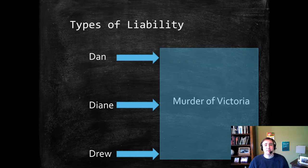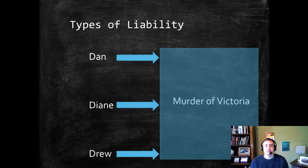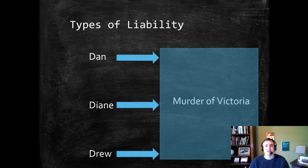If you look at the slide here, we imagine there's a murder of a person Victoria — conveniently begins with V for victim — and we have three suspects Dan, Diane, and Drew, conveniently named because D is for defendant. Up till now we would have said well, one of them might be liable even if they were all working together, right — even if they all coordinated their plans, like one provided a gun, one lured Victoria to the location where she would be killed.